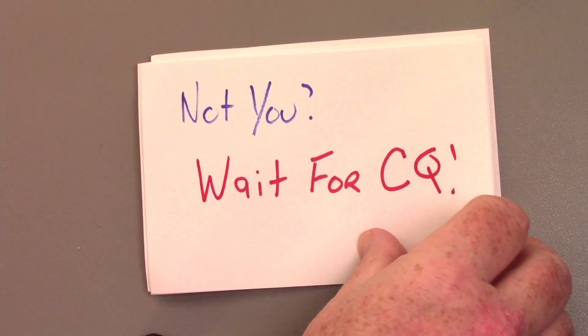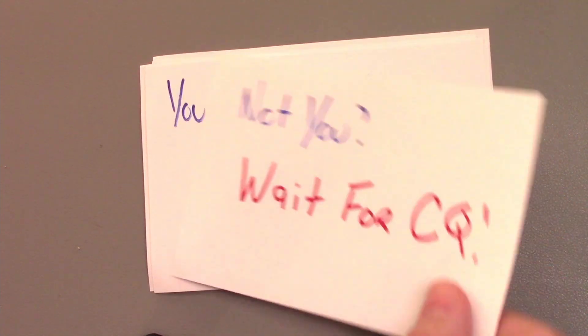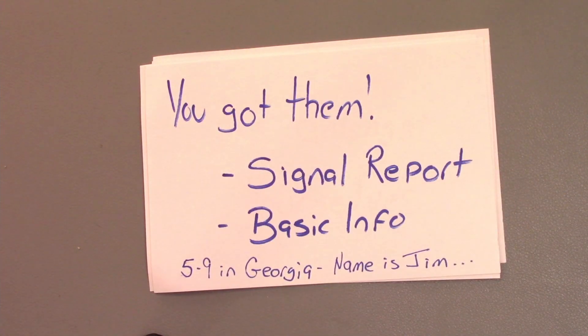But all right, so you've done that and you've been patient. And finally, that distance station hears you. You got them. Here's what you want to do. They're going to say, all right, November 4, Bravo Foxtrot Romeo, go ahead. And you're going to say, hi, my name is November 4, Bravo Foxtrot Romeo. You are 59 or whatever the signal report is in Georgia.